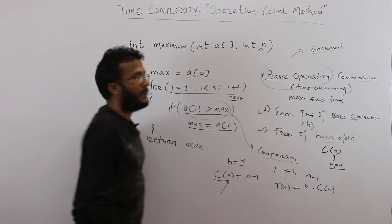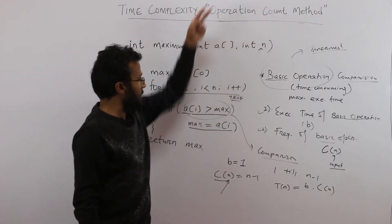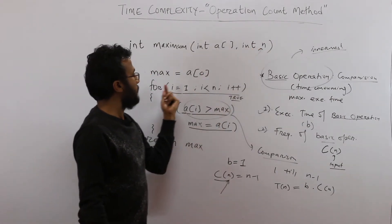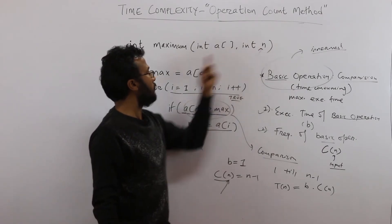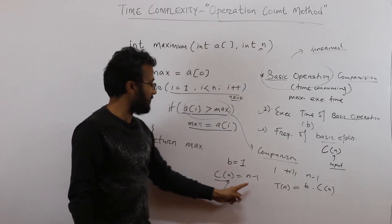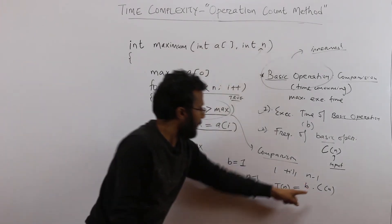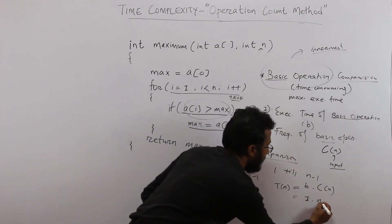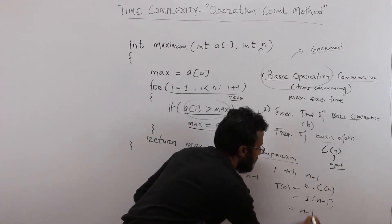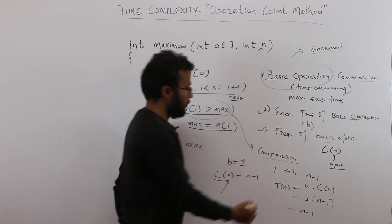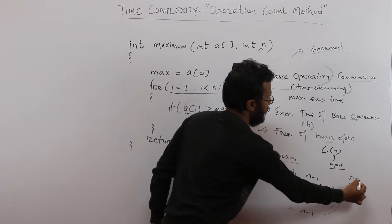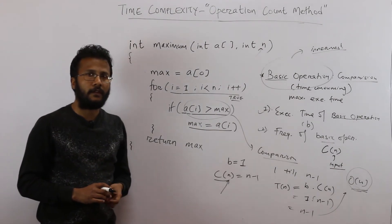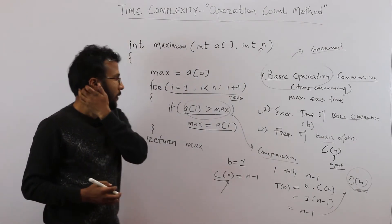The count is a function of n, where n is the size of the array. If n is 10, the loop runs 9 times; if n is 20, it runs 19 times, because it is n minus 1. With b equal to 1 and count equal to n minus 1, the time complexity is n minus 1, which asymptotically is O(n). So the time requirement for this algorithm is O(n).